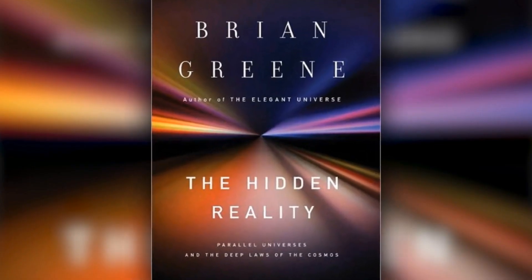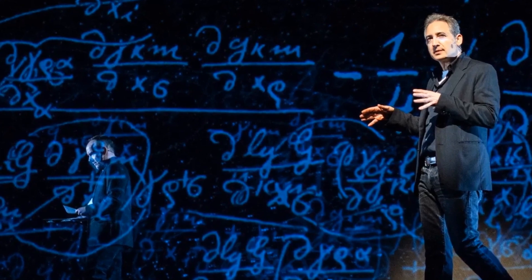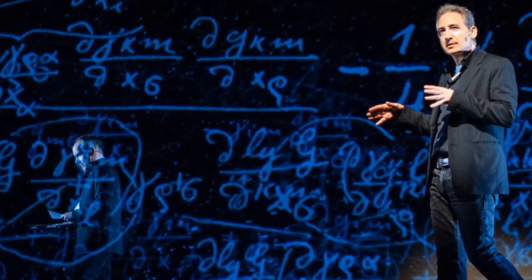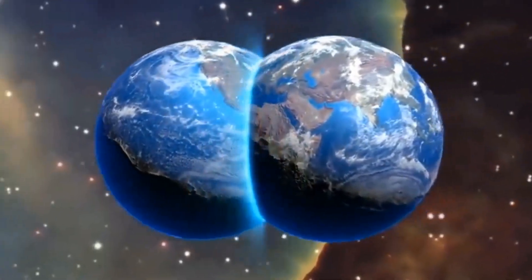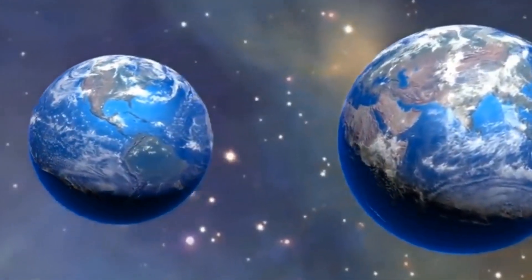In his book The Hidden Reality, Columbia University physicist Brian Greene describes the idea as our universe is one of potentially numerous slabs floating in a higher-dimensional space, much like a slice of bread within a grander cosmic loaf.